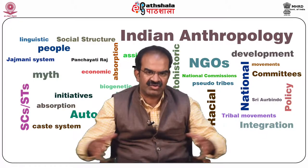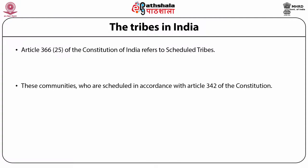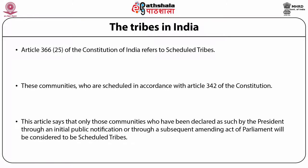If we look at the entire tribal scenario in the country, Article 366 plus 25 of the Constitution of India refers to the scheduled tribes specifically for their rights and their privileges. And these communities who are scheduled in accordance with Article 342 of the Constitution clearly says that the President of India is the only authoritative person to declare that any community, if they claim the scheduled tribe status in accordance with the state and Union territories, shall be deemed fit to become a scheduled tribe.